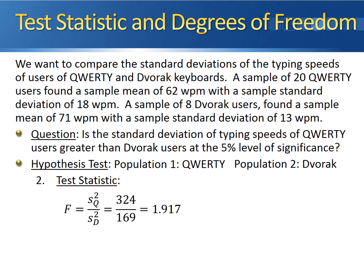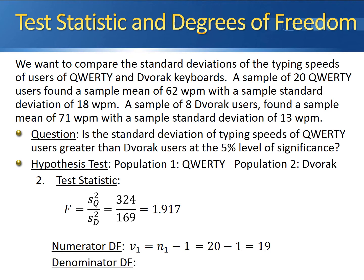The F-test for the ratio of two variances has two degree-of-freedom parameters, one in the numerator and one in the denominator. The numerator degrees of freedom is the sample size from the first sample minus 1, which gives 19 degrees of freedom. The sample size for the Dvorak users was 8, so there are 7 degrees of freedom in the denominator.